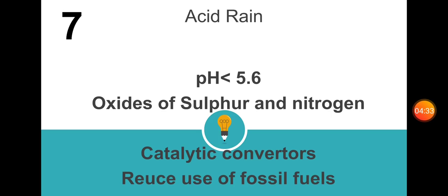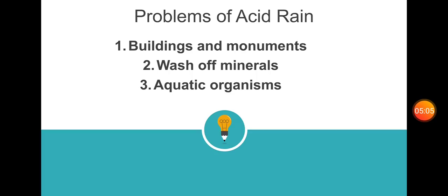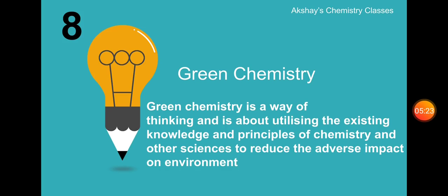Topic eight: acid rain. Normal rainwater has a pH of 5.6. Problems of acid rain include damage to buildings and monuments, and washing away of minerals from soil. The important causes are oxides of sulfur and nitrogen from factories, which dissolve to form acid rain. Solutions include using catalytic converters and reducing fossil fuel use. Acid rain also harms aquatic organisms.